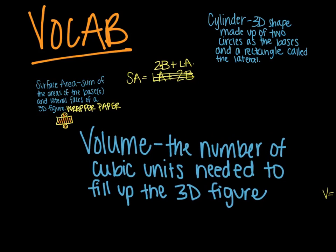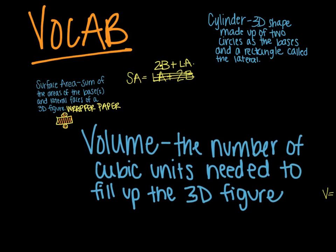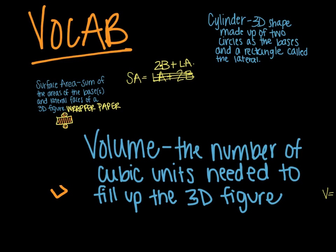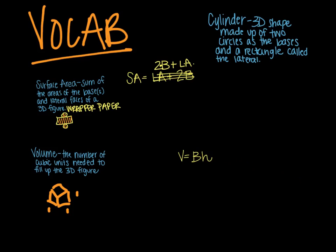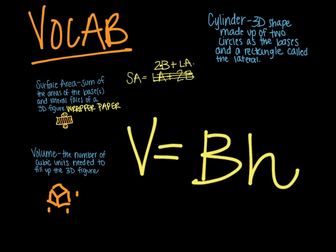Volume is the number of cubic units needed to fill up a three-dimensional figure. When we're talking about cubic units, think about a little cube — it is one by one by one: the height is one, the length is one, and the width is one. Volume is saying how many of those little cubes fill up that three-dimensional figure. It will be in units cubed, or to the third power.